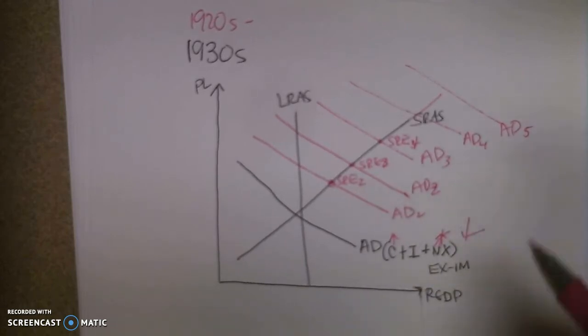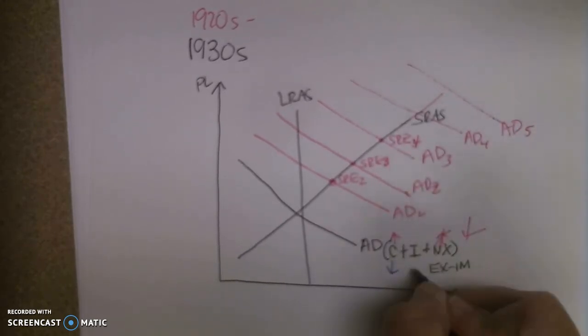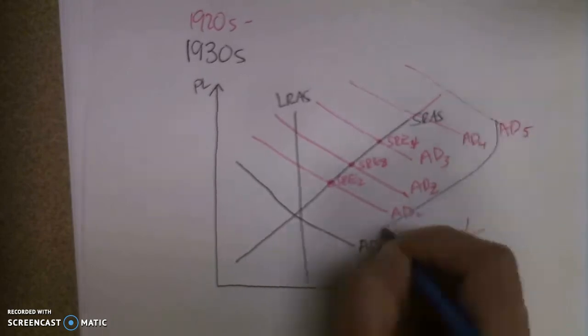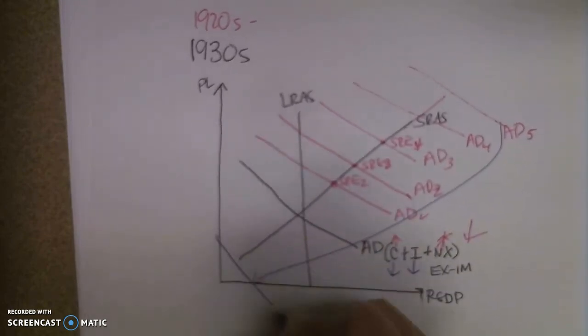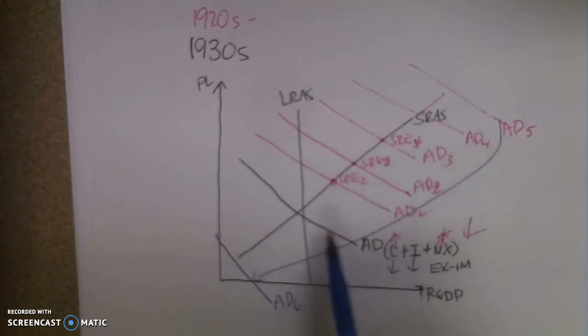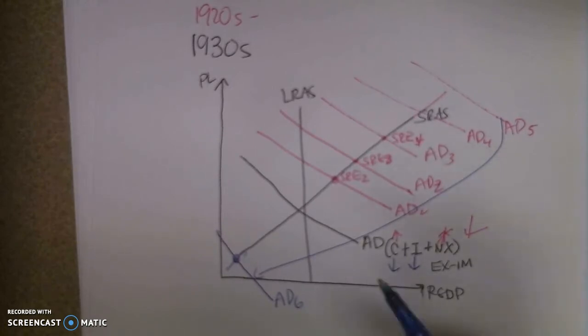Well, net exports dramatically drop. It pushes this curve. And when they began to drop, consumption also goes down. Investments go down. We don't need to build new buildings. We don't need to build new factories. And this AD curve moved way over here, pushing us into a significant recession, and depression actually ended up being a depression.